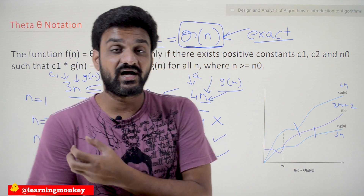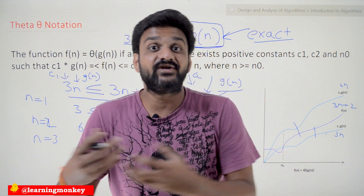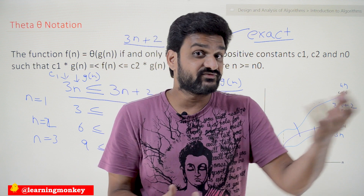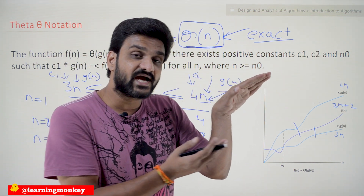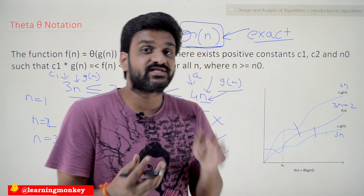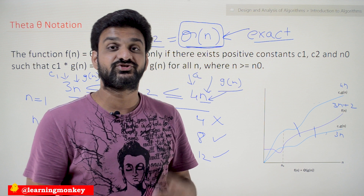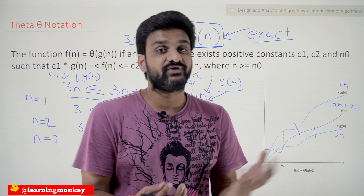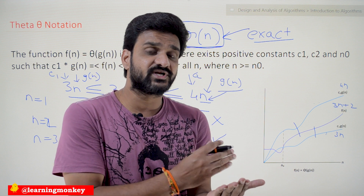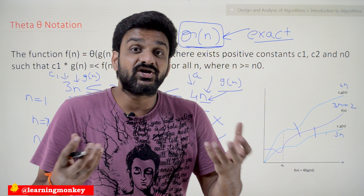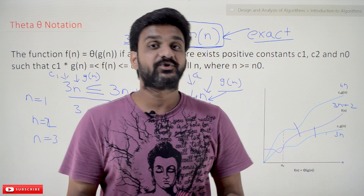We have seen why theta notation is used, but where can we apply it to algorithms? Big O notation can be applied whenever algorithms are describing the upper bound — whenever we are only able to express the upper bound. Similarly, whenever we are able to express only the lower bound, we use Omega notation. For what kind of algorithms we can give the theta notation, we will try to understand in our next class. Hope you got clarity on this concept.